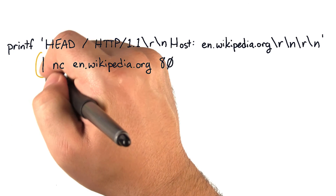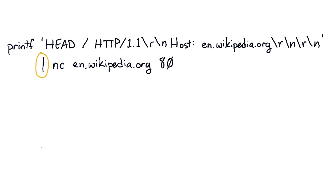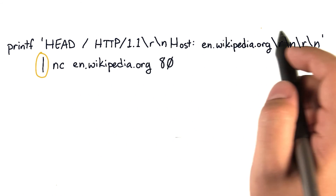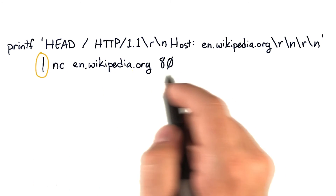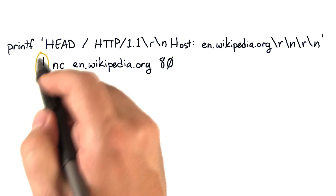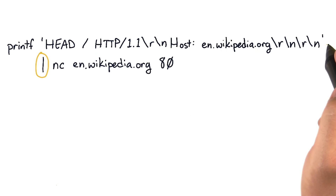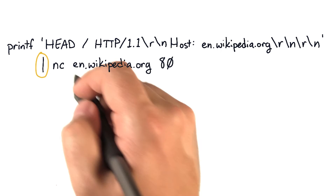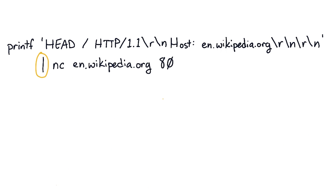Now let's take another look at this here in the middle. The vertical bar here is a pipe. It's the standard Unix way to say, take the output of this program and feed it in as the input of that program. So we're taking the output of printf, which is a string that forms an HTTP request, and using that as the input to nc. nc takes that input and sends it over the network to the address and port that we tell it to, and displays the output.